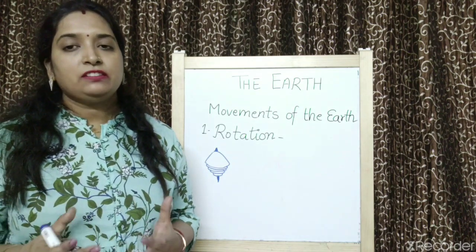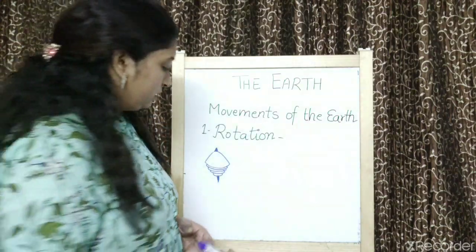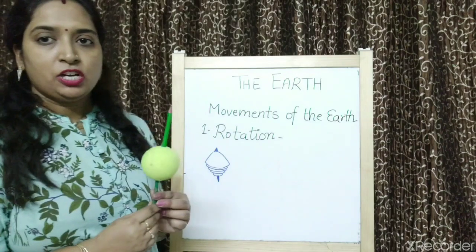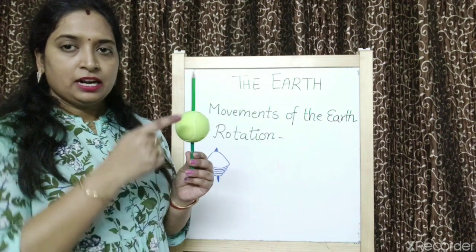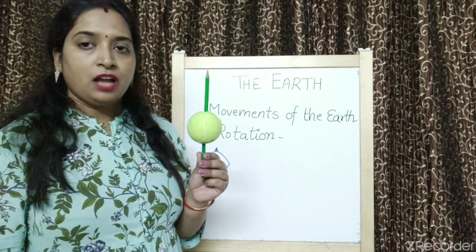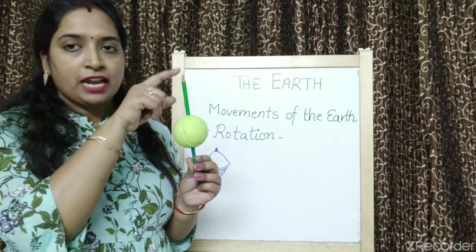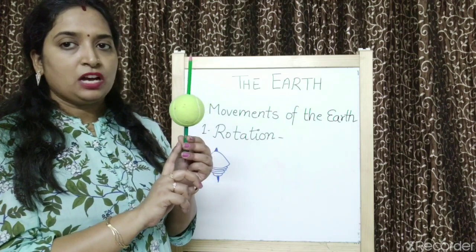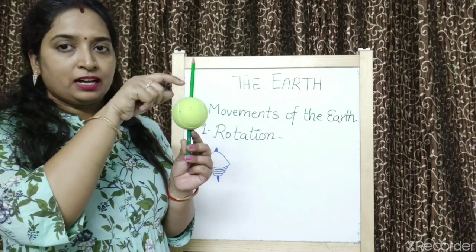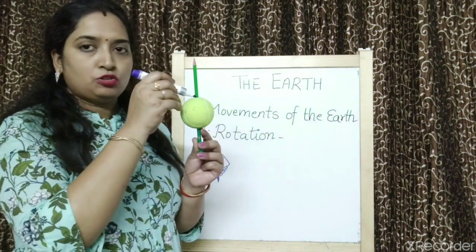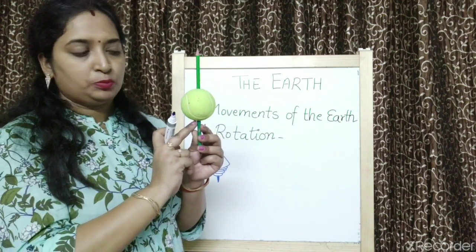Earth spins on its axis. Now the question arises, what is axis? Here there is a model showing earth. Suppose this ball is earth. This line is the axis. Axis is an imaginary line — it is not an original one. It is an imaginary line which passes through the center of the earth. It passes through the north pole and the south pole. The end points are north pole and south pole. In the middle of the earth, this is called the equator.